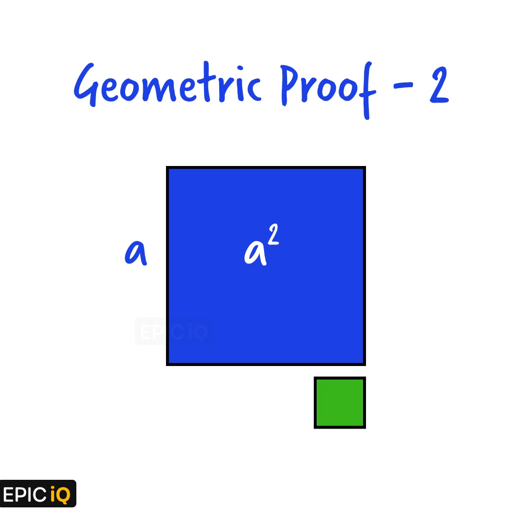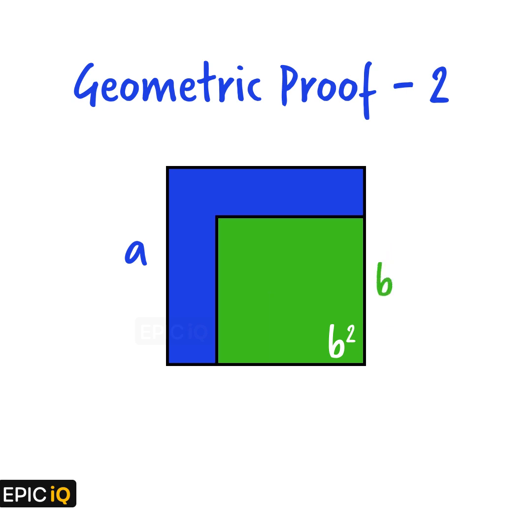Now, we subtract a green square with side b and area b squared. Let us make this square a bit bigger this time. Now, we have only a portion of the original blue area left. This blue area is the difference of squares. That is, a squared minus b squared.